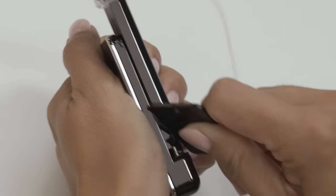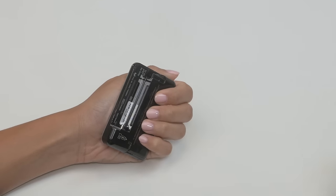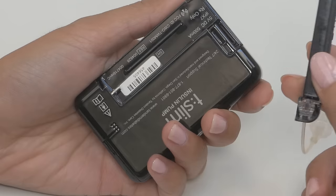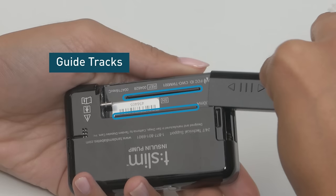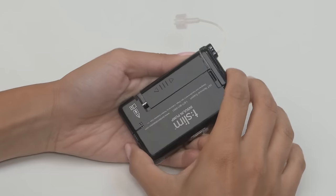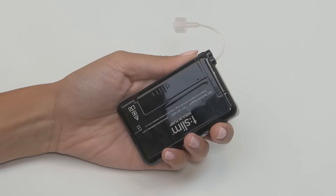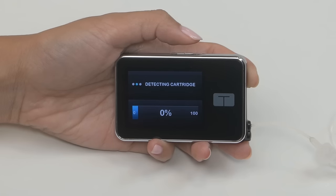Remove your used cartridge using the removal tool. You can also use a coin. Install your newly filled cartridge by placing the bottom edge at the end of the pump like this and lining up the grooves on either side of the cartridge with these guide tracks on the pump. Once lined up properly, push the cartridge on until you feel it click into place. The cartridge should fit smoothly against the pump. Your pump will take a few moments to detect the newly installed cartridge.